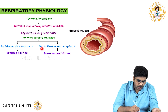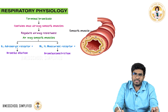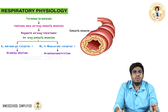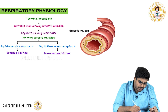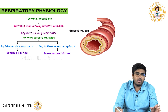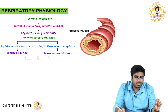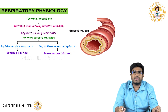There is also a parasympathetic receptor on the bronchial smooth muscles — the M3 muscarinic receptor. Whenever the parasympathetic nervous system is activated, it releases acetylcholine. Activation of M3 receptors by acetylcholine causes contraction of smooth muscles, leading to bronchoconstriction.